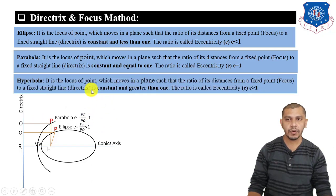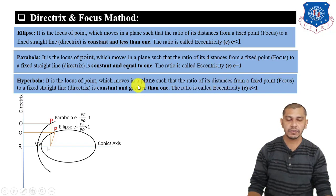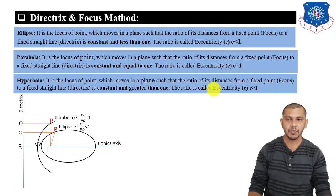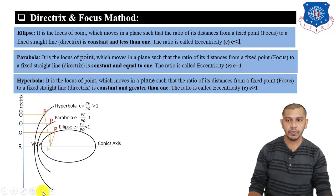Then after, hyperbola. It is a locus of a point which moves in a plane such that the ratio of its distances from the fixed point to a fixed straight line will remain constant and greater than 1. This ratio is known as the eccentricity ratio, and it will be greater than 1 for hyperbola.